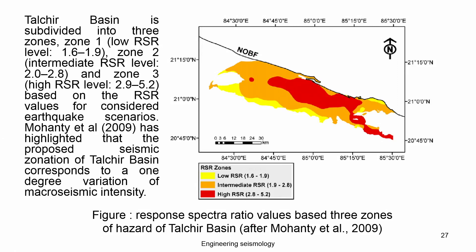You can see the fault and associated features in the published figures. The Talchir basin is divided into zones based on RSR values. Mohanty highlighted that the proposed seismic zonation of the Talchir basin corresponds to a 1-degree variation of the macro-intensity scale. This is actually a micro-level study, but it only considered three parameters without discussing liquefaction and other effects typically associated with basins.